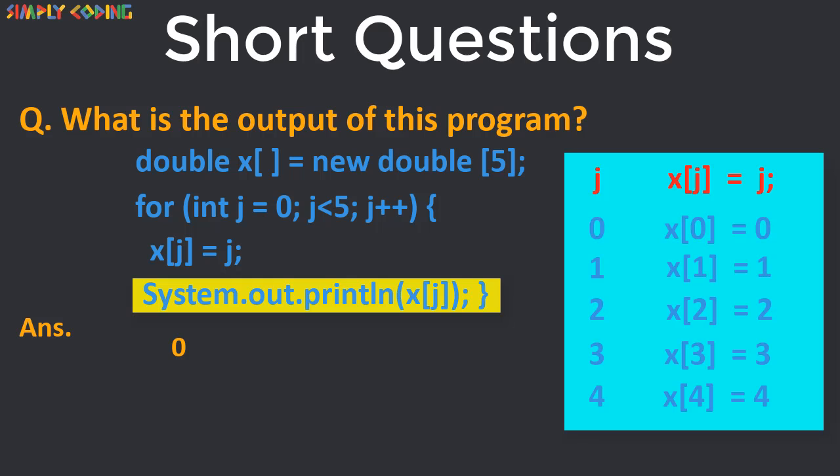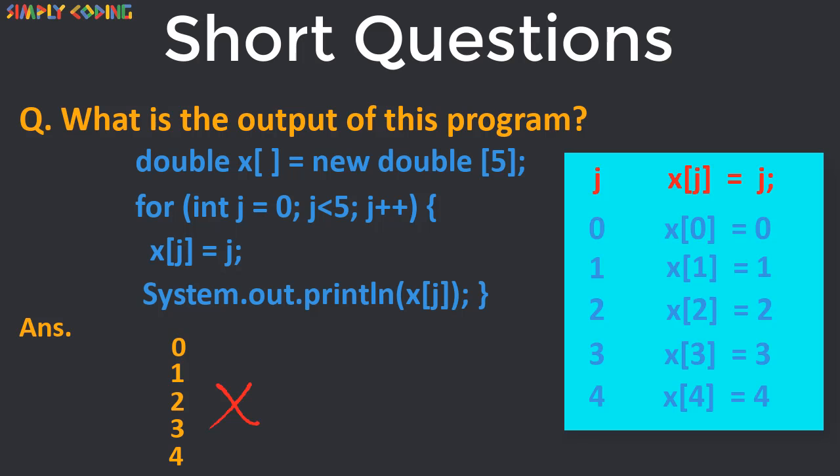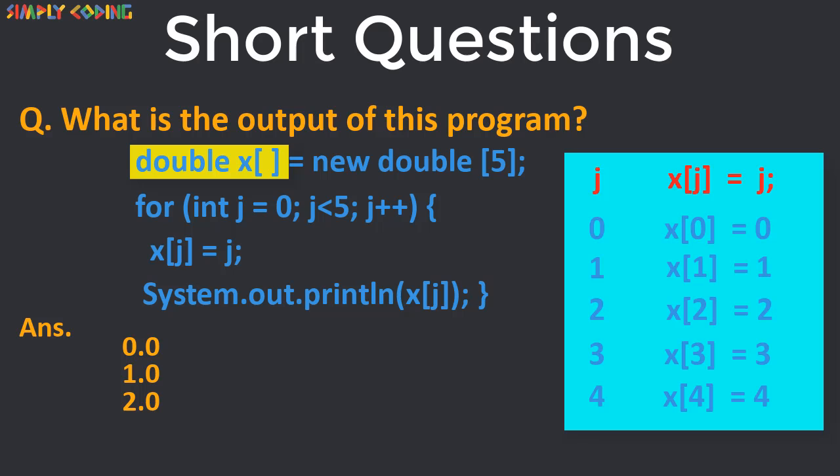So you think it will print 0 to 4 in a single straight line? No. It is double array so it will print 0.0 then 1.0, 2.0, 3.0 and then 4.0. In all such questions pay attention to what data type you are printing and then print accordingly.